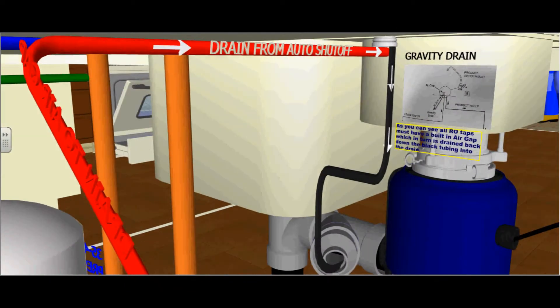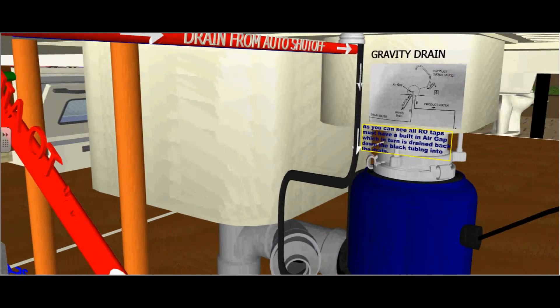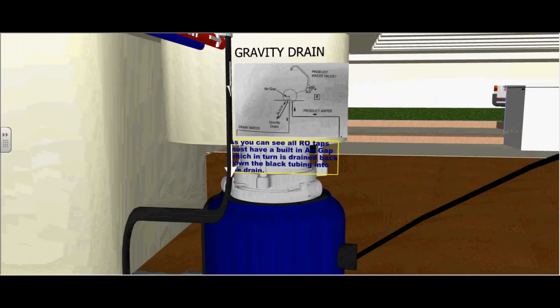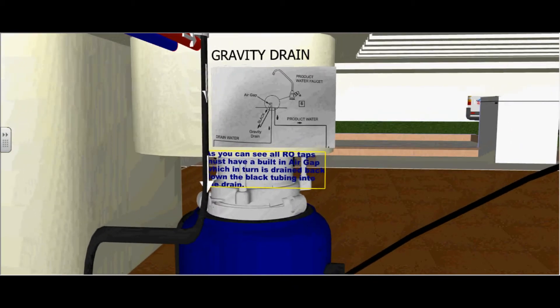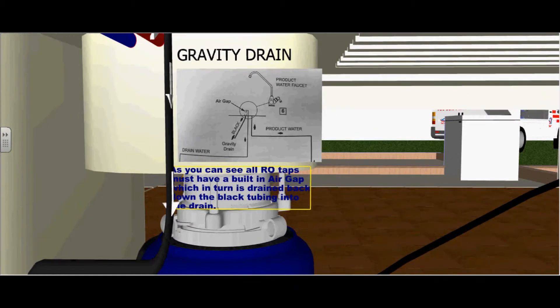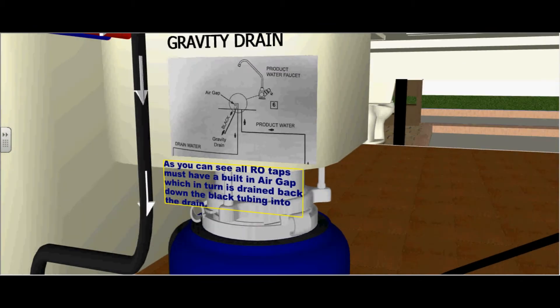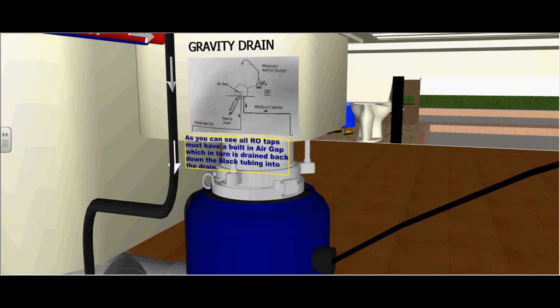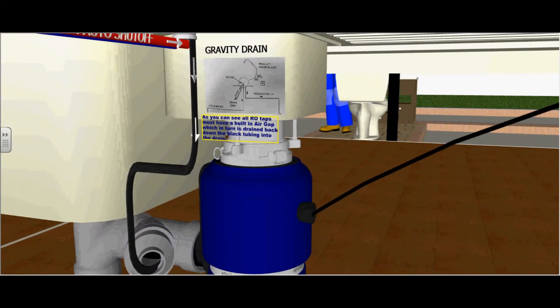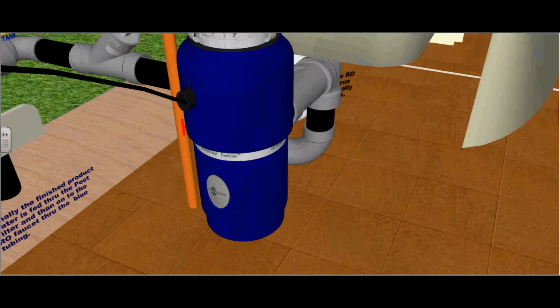It will go to the RO faucet located on the sink. As you can see, all RO faucets must have a built-in air gap, which in turn is drained back down towards the black tubing or into the continuous waste under the sink. Here is a good diagram of the air gap built into the faucet. And there you can see the waste water drains down into the continuous waste of the kitchen sink.